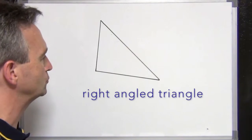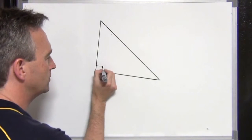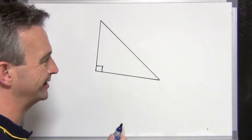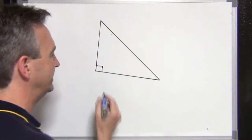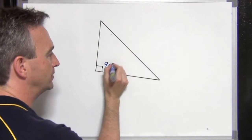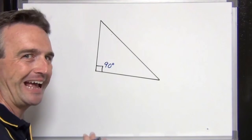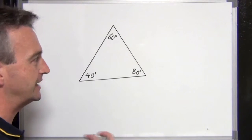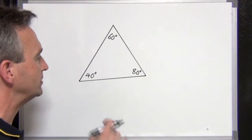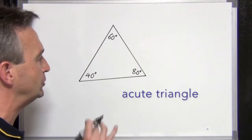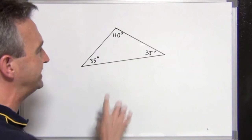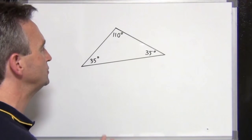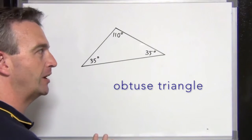Another common triangle is the right angle triangle, quite often called just a right triangle. One of the angles is 90 degrees — usually shown with a little box to indicate 90 degrees. If each angle in a triangle is less than 90 degrees — in other words, each angle is an acute angle — then you can describe the triangle as being an acute triangle. If one of the interior angles is larger than 90 degrees — an obtuse angle — then you could say your triangle is an obtuse triangle.